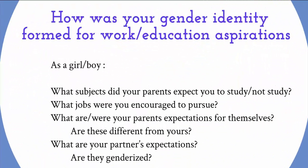Let's take a look at how your own gender identity was formed for your work or education aspirations. As a young girl or boy, what subjects did your parents expect you to study or not study? What jobs were you encouraged to pursue? What are or were your parents' expectations for themselves, and are these different from yours? Were they based on your cultural backgrounds and how your culture defined what was okay for a girl versus a boy? And what are your current partner's expectations — are they genderized as well?